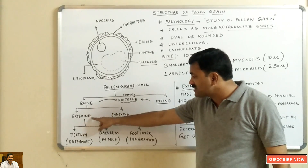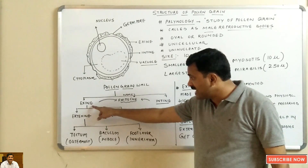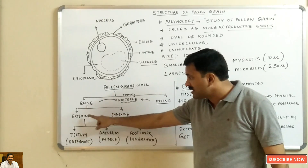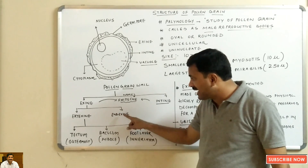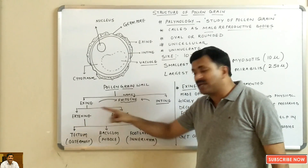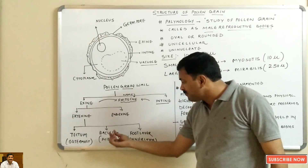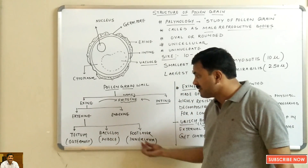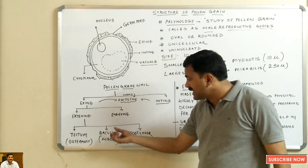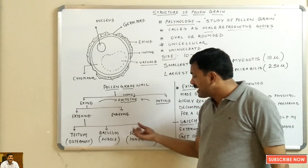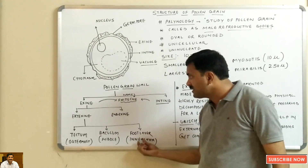The exine is classified into two layers: ectexine and endexine. The ectexine is further divided into three layers — the outer layer, the middle layer, and the inner layer — which are respectively called tectum, baculum, and the foot layer, which is the innermost layer.